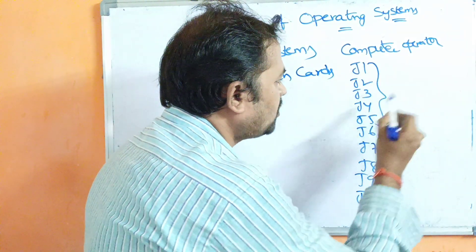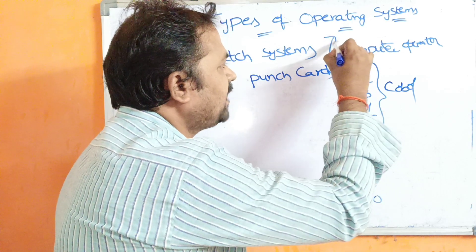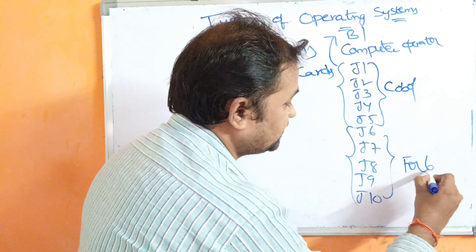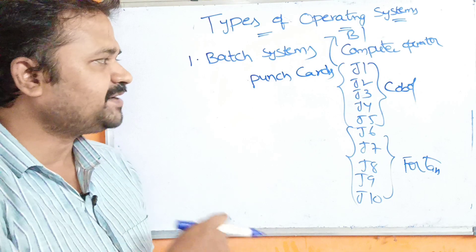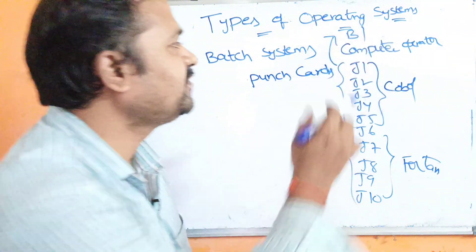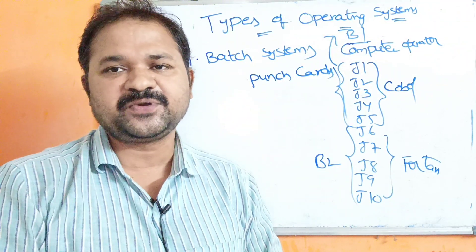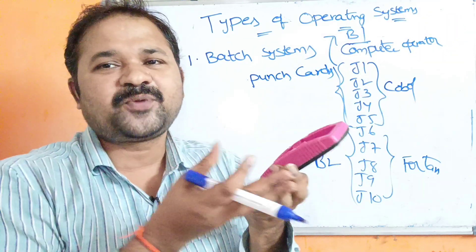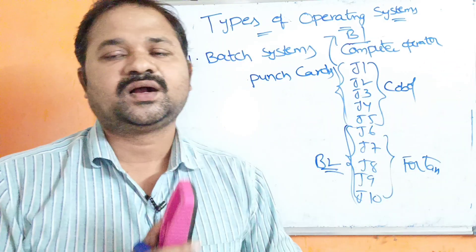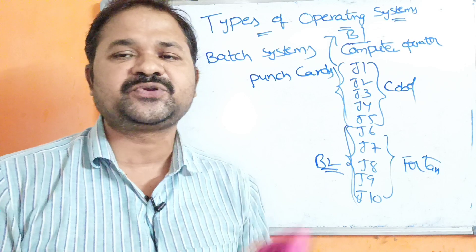Let us assume the first five jobs are executed using COBOL programming language, so they will be grouped into a batch called B1. The next five jobs are implemented using Fortran language. The computer operator provides B1 job information to the computer, which executes B1. After producing the output, the computer operator supplies batch B2 information to the computer, which executes it and produces output for the user.